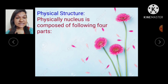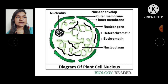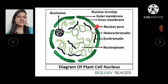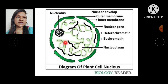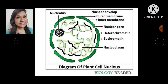The physical structure of nucleus is composed of four parts. Number one: the nuclear envelope. The nuclear envelope is bilayered and composed of a phospholipid bilayer. It has an outer membrane and an inner membrane. It contains nuclear pores, heterochromatin, and euchromatin. The space inside is the nucleoplasm, and within it are the nucleolus and the chromatin reticulum. This is the structure or diagram of the nucleus.